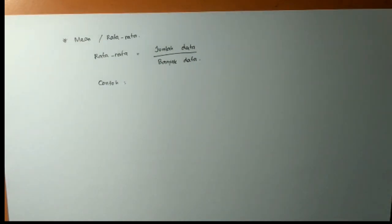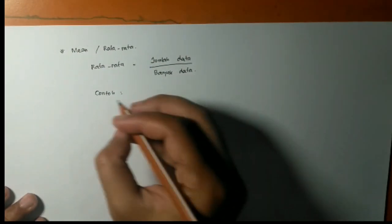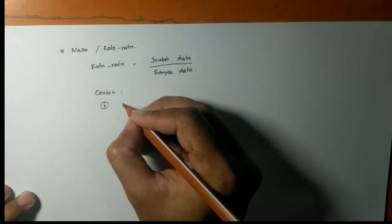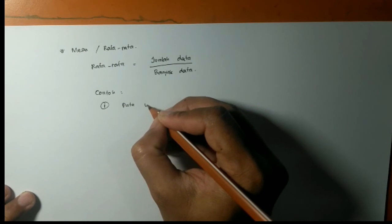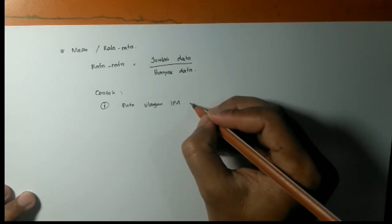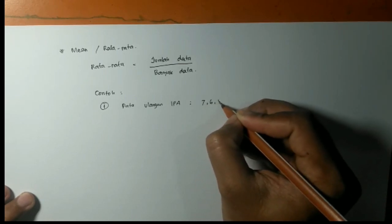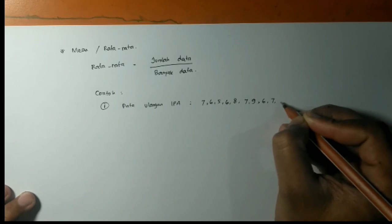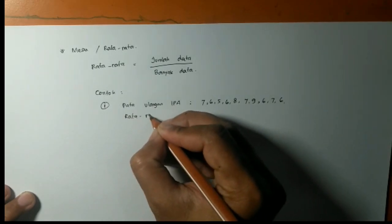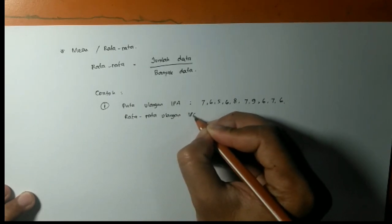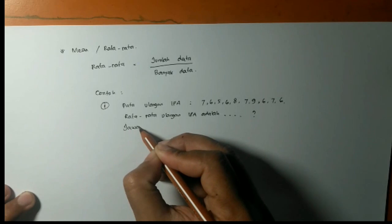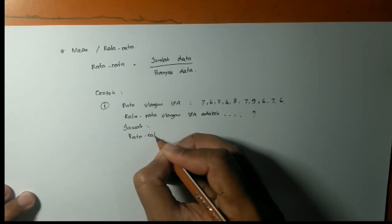Mungkin lebih mudah kita langsung ke contoh soal. Kita ambil contoh soal nomor 1 tadi aja. Yaitu data nilai ulangan IPA tadi ya. Kita tuliskan lagi. 7, 6, 5, 6, 8, 7, 9, 6, 7, 6. Tapi pertanyaannya kita ubah. Kalau tadi mencari modus sekarang berapakah rata-rata nilai ulangannya. Nah, ini gimana? Sama seperti kalau kalian ditanya berapa rata-rata nilai mu. Nah, caranya gini. Pakai rumus. Rumus rata-rata ya.